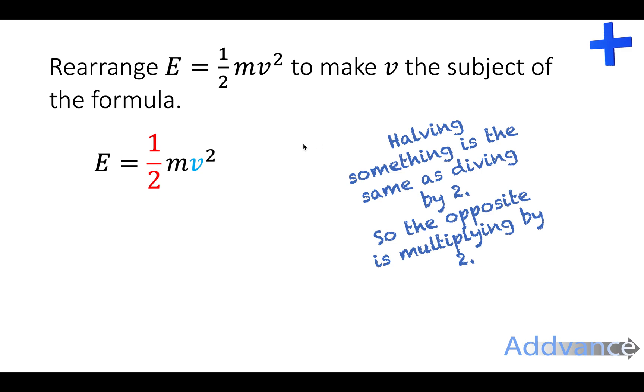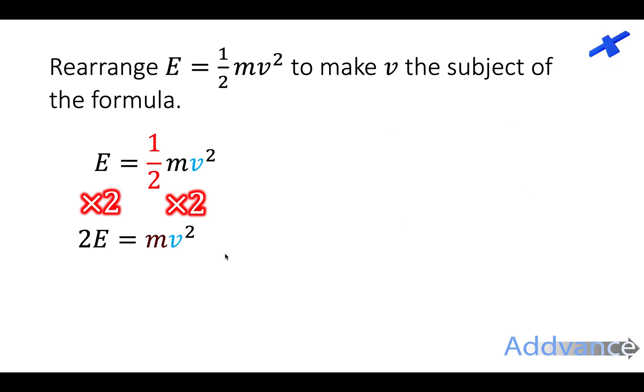The first thing we notice is it's being multiplied by a half. Halving something is the same as dividing by 2 and the opposite of dividing by 2 is multiplying by 2. So you multiply both sides by 2 to get rid of the divide by 2. And we get 2E, E times 2 is 2E equals mv squared. Now we want to get rid of this m over here. This m is multiplying the v squared so again we're going to divide by m to get rid of that. And we get 2E divided by m equals v squared.